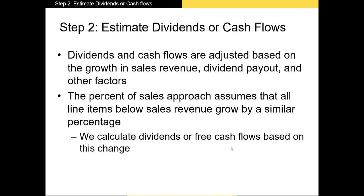Once we have our line item information we need to estimate our dividends or cash flows, because they represent the cash that shareholders have generated. Notice that I've said cash — this is one very important difference between finance and accounting. In accounting the focus is on accounting earnings or net income, which are adjusted for non-cash expenses like depreciation or amortization. In finance we focus on cash flows: we want to know how much you as a shareholder can receive in hard currency.